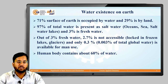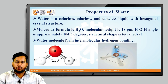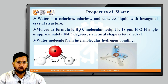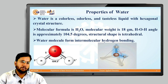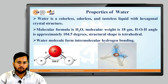We know that the human body contains about 60% of water. If we talk about the properties of water, water is a colorless, odorless, and tasteless liquid with a hexagonal crystal structure due to intermolecular hydrogen bonding. The molecular formula of water is H₂O and its molecular weight is 18 grams. Due to repulsion between the lone pair of electrons on the oxygen atom and the bond pairs between oxygen and hydrogen, the bond angle H-O-H is 104.5 degrees, with a structural shape that is tetrahedral.